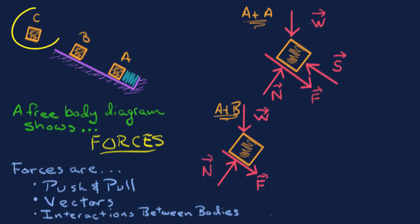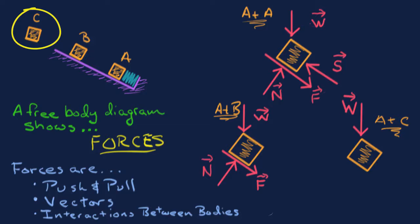At point C, the block has become a projectile — it's airborne. We still include weight, because the earth pulls on it regardless. But at point C the block is no longer touching the ramp, so there's no normal force and no friction. It's not touching the spring either, so no spring force.